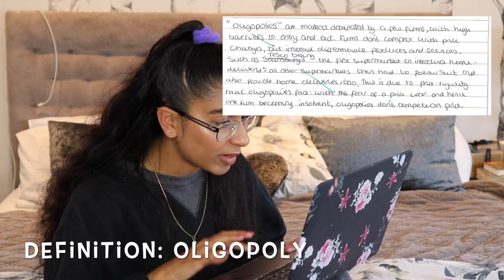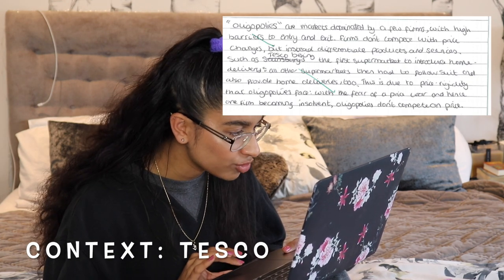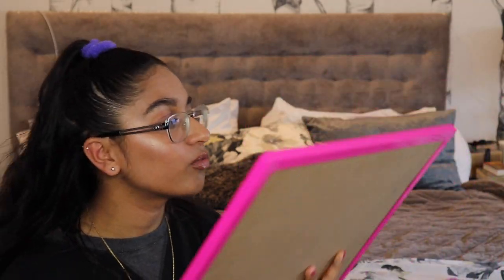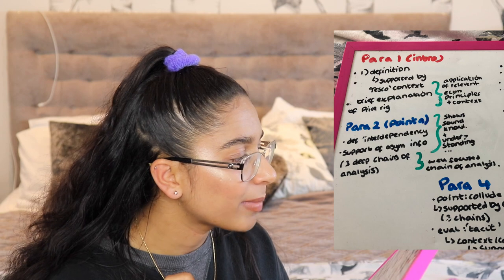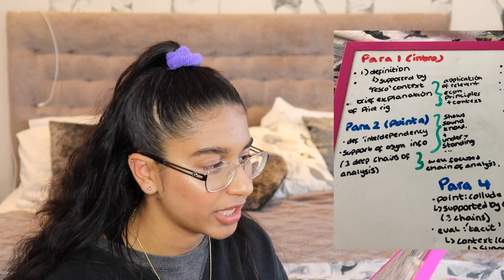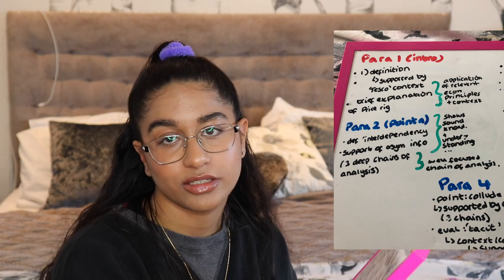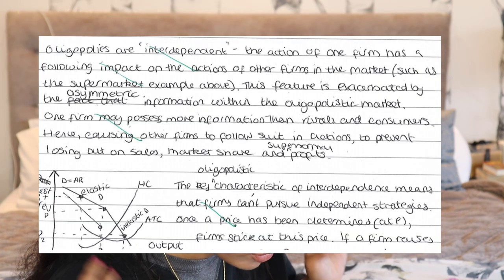That itself has explained the interdependent nature of oligopolies, which is in the question. This is due to price rigidity that oligopolies face — which is actually a characteristic of oligopolies — with the fear of a price war and hence one firm becoming insolvent. An average student would have just stated the definition and the Tesco example and left it there. We're not aiming to be average — we're aiming for full marks. Linking to the mark scheme, this hits application of relevant economic principles and context.